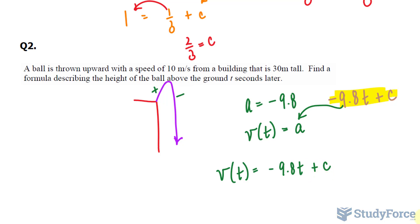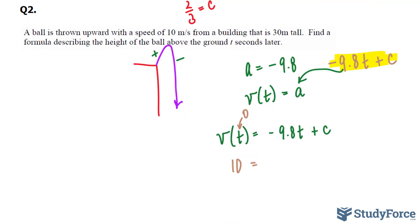Where I have the velocity as a function of time is equal to negative 9.8t plus c. Now remember that the ball at time 0 is traveling 10 meters per second. So when t is equal to 0, the velocity is 10. So we can solve for c this way: 10 is equal to negative 9.8 times 0 plus c. Therefore, our arbitrary constant happens to be 10. Our velocity function is negative 9.8t plus 10.